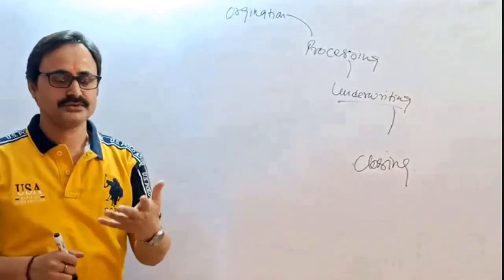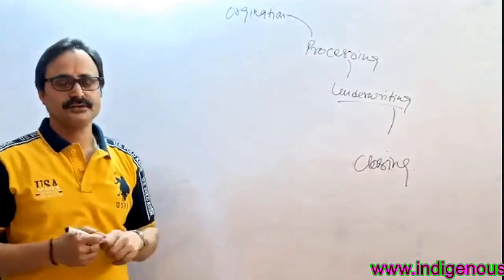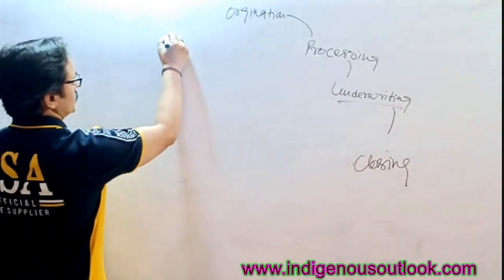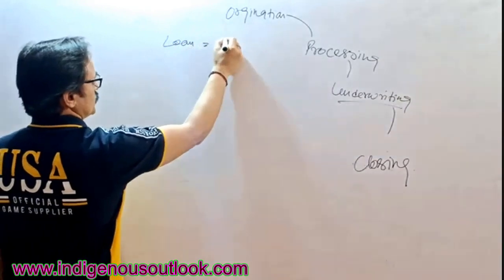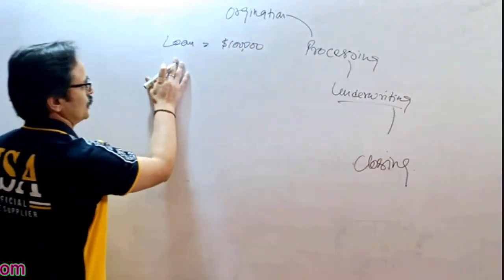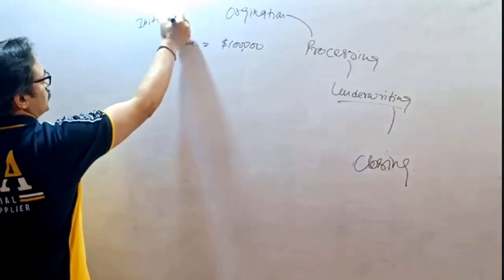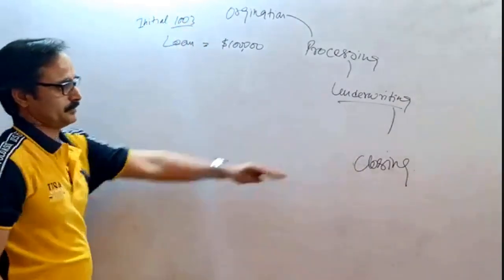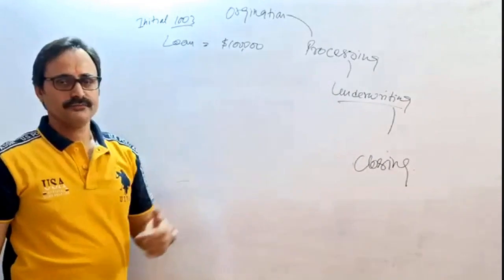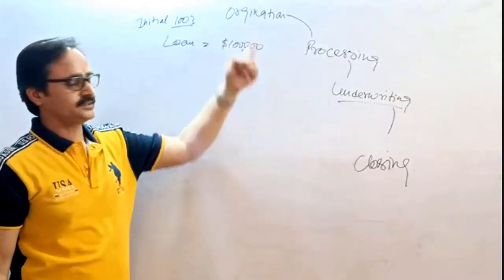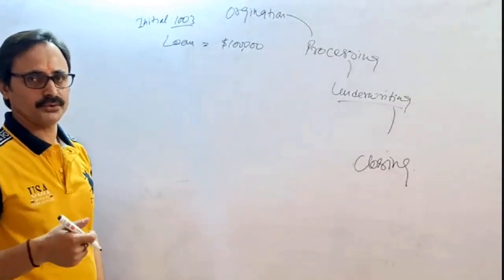How does the closing happen? As soon as the file is done in underwriting, remember the initial 1003 which the borrower had filed — this is a very important topic, more important than underwriting. If we lose this segment, we won't be confident in all these parts. It's more important than all three parts because it's the conclusion. If we do not know how it needs to be concluded, we won't be able to start.